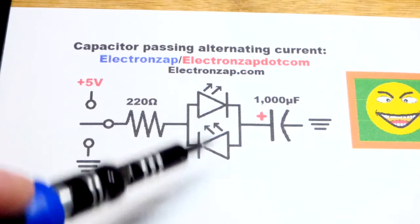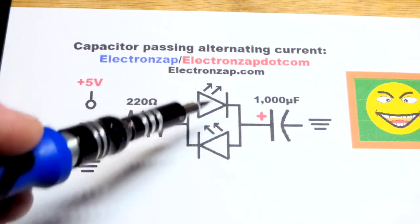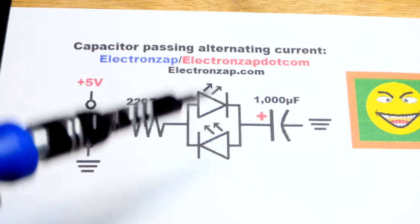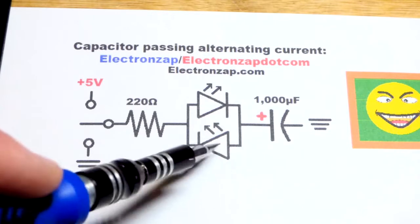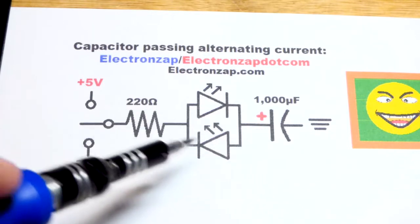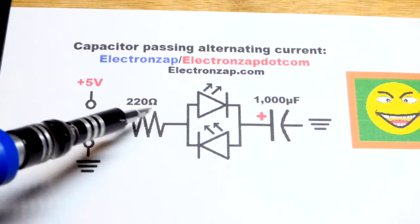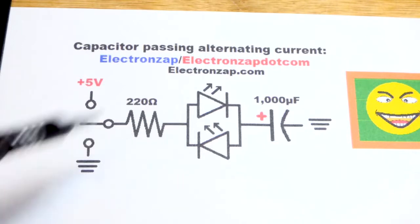And so in series with the capacitor we have a polarity indicator, a couple LEDs wired in opposite directions. One lights up when current goes in one way, positive and negative, and then the other one lights up when current goes in the other way, positive to negative.